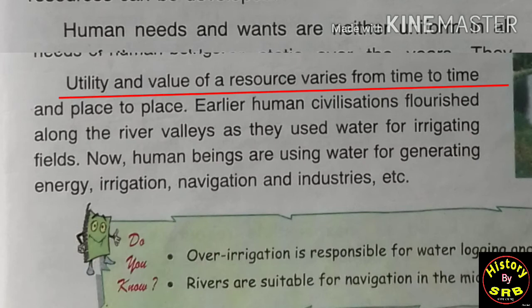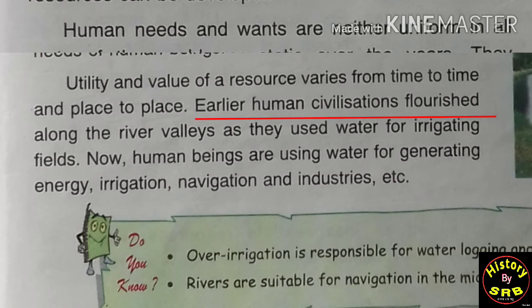Resources' utility and value vary from place to place and time to time — it is possible that something that has utility in one place may not have utility in another. For example, earlier human civilizations flourished along the river valleys. The ancient civilizations developed along river valleys, as we know about river valley civilizations.